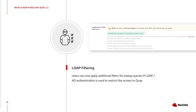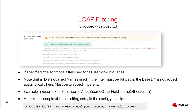Another feature we introduced is LDAP filtering. Users using LDAP or Active Directory as their authentication backend can now restrict access to Quay by specifying a specific LDAP filter. The result is stored in the config file, and from that point only users matching those filter rules can log in to Quay.